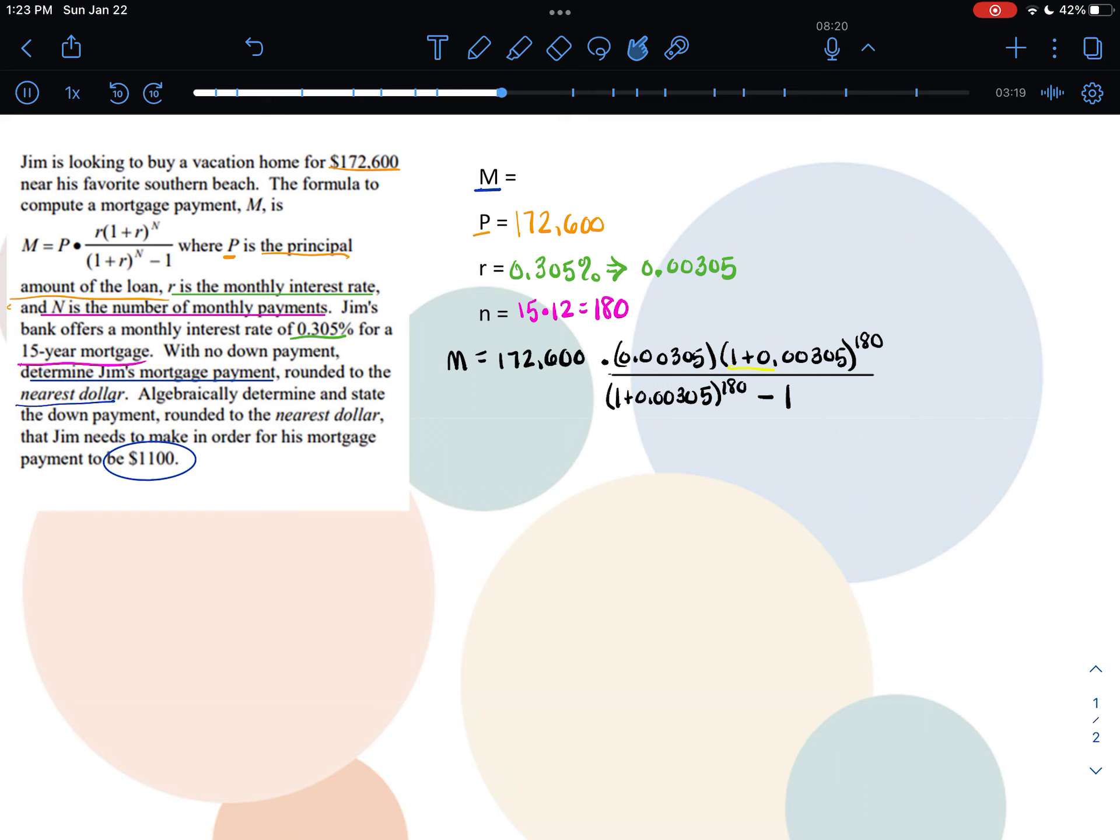Next, I've just simplified these two parts here to make them a little bit easier. So, simplifying those two, I get M equals 172,600 times 0.00305 times 1.7300745 over 1.7300745 minus 1.